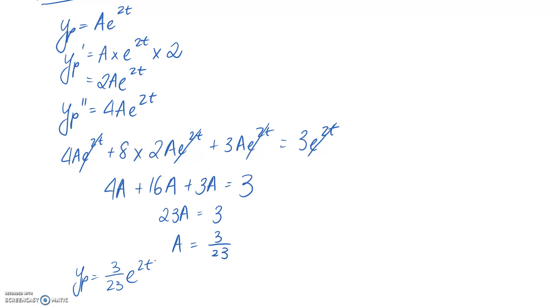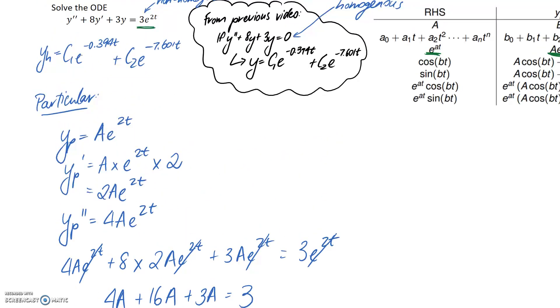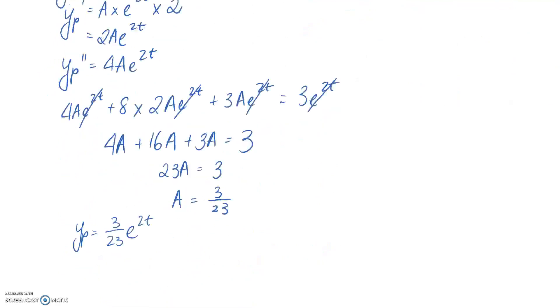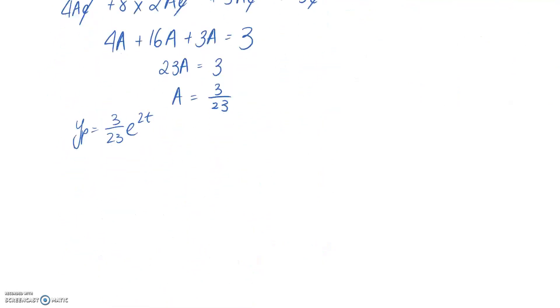So the final step is to just kind of put all of this together. So we've got the homogeneous solution, and we've got the particular solution, and we know that the overall solution, which I'll call y, is going to be both of them added together. So if we put them together, we're going to get c1 e to the exponent, c2 again with that exponent, and then adding on this part at the end.